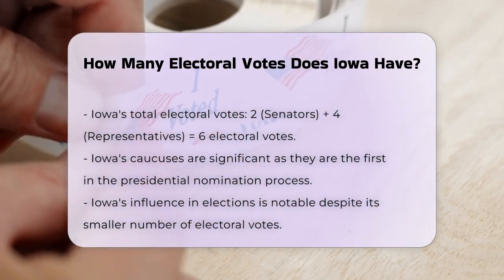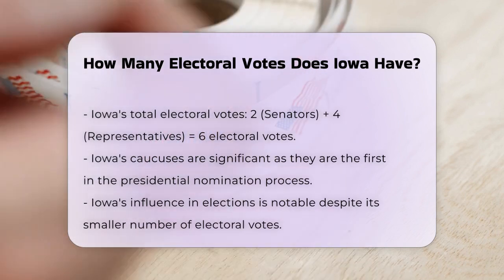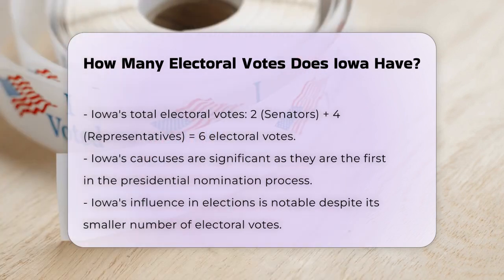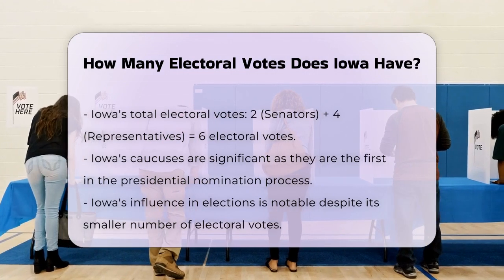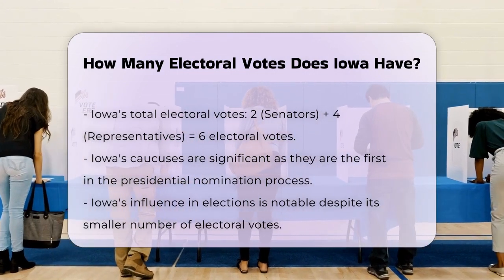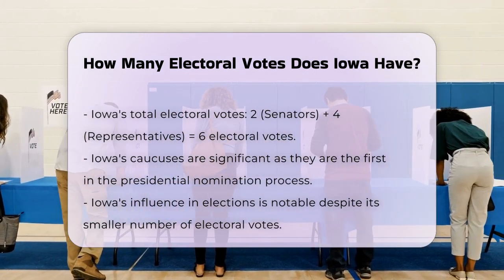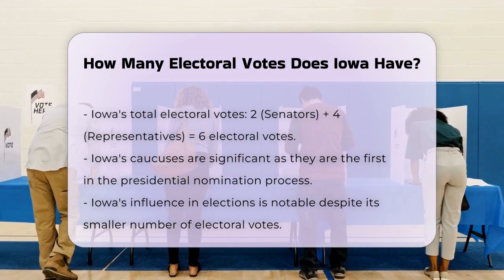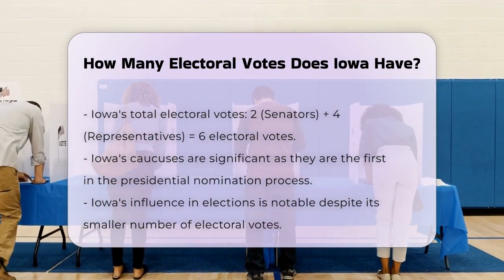Historical Context and Significance: Iowa, despite having fewer electoral votes compared to some of the more populous states, holds significant influence due to its caucuses, which are the first in the presidential nomination process.